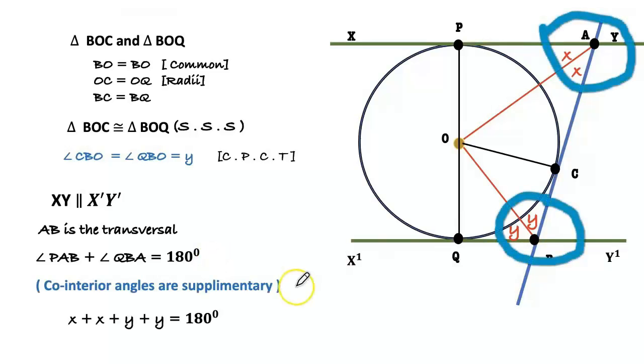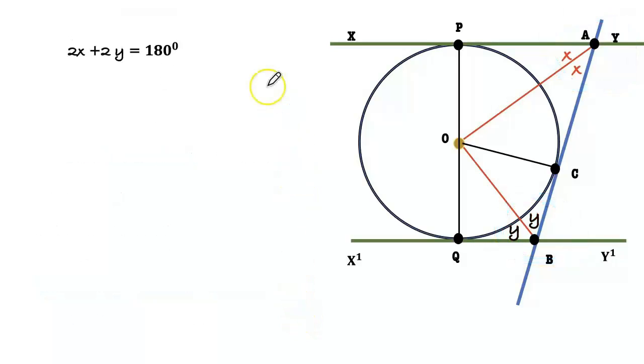Therefore x plus x is 2x and y plus y is 2y. 2x plus 2y equals 180, 2 times x plus y equals 180. Therefore x plus y equals 90. Angle OAB plus angle OBA equals 90 degrees.